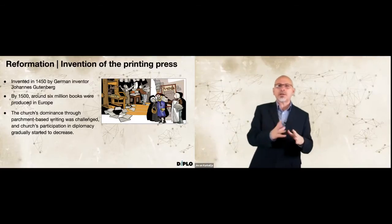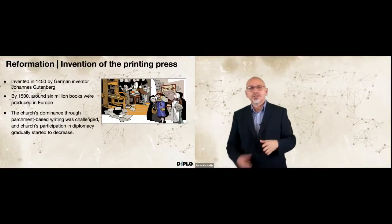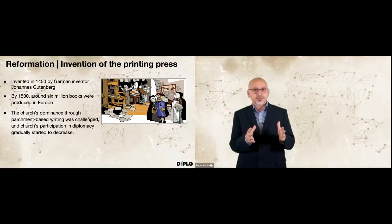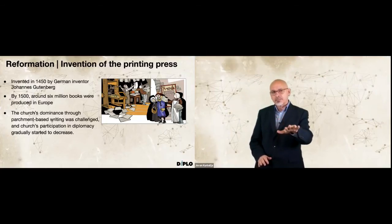The printing press had a considerable impact on all functions of society, including diplomacy. The church's dominance through parchment-based writing was challenged. The church's participation in diplomacy gradually started to decrease. Clergymen no longer had a monopoly on literacy, and no longer were they an indispensable part of almost every diplomatic mission. As Mark Twain said: 'What the world is today, good and bad, it owes to Gutenberg. Everything can be traced to this source, but we are bound to bring him homage, for the bad his colossal invention has brought about is overshadowed a thousand times by the good with which mankind has been favored.'